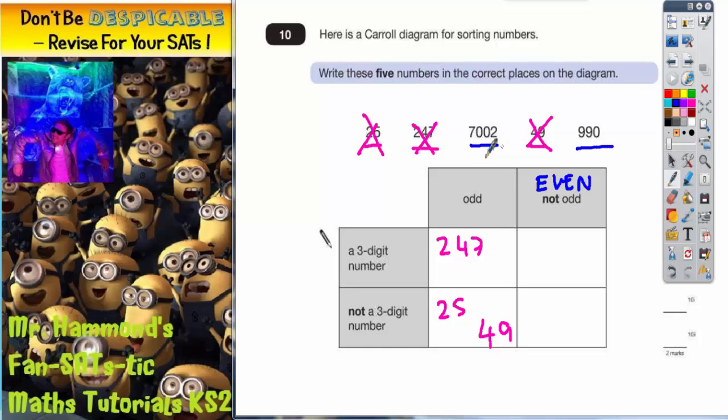So 7002, is it a three digit number? No, it isn't. It's got four digits. So 7002 must go here because this row is the things that are not three digits. That's that one done.